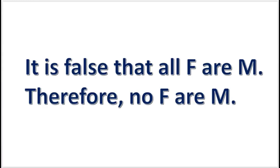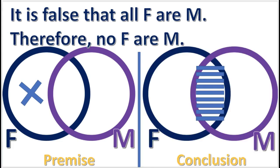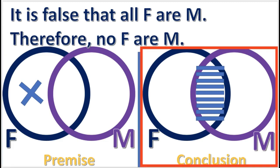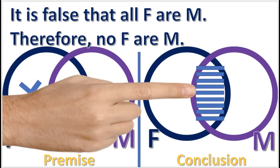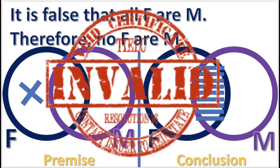Let's look at another inference. First we draw diagrams for the premise and conclusion. Then we look to see if the information in the premise diagram is contained in the conclusion diagram. The conclusion diagram has a shaded overlap area, but the premise diagram does not. So the inference is not valid.